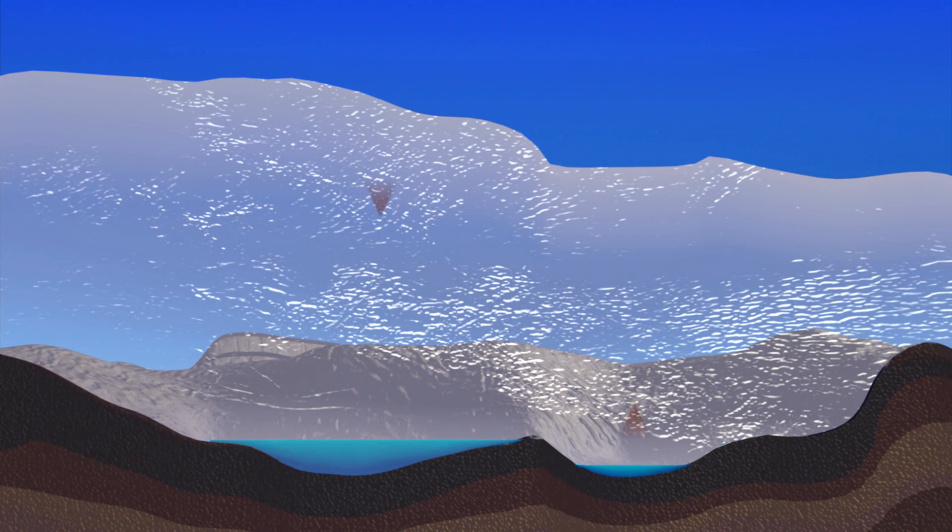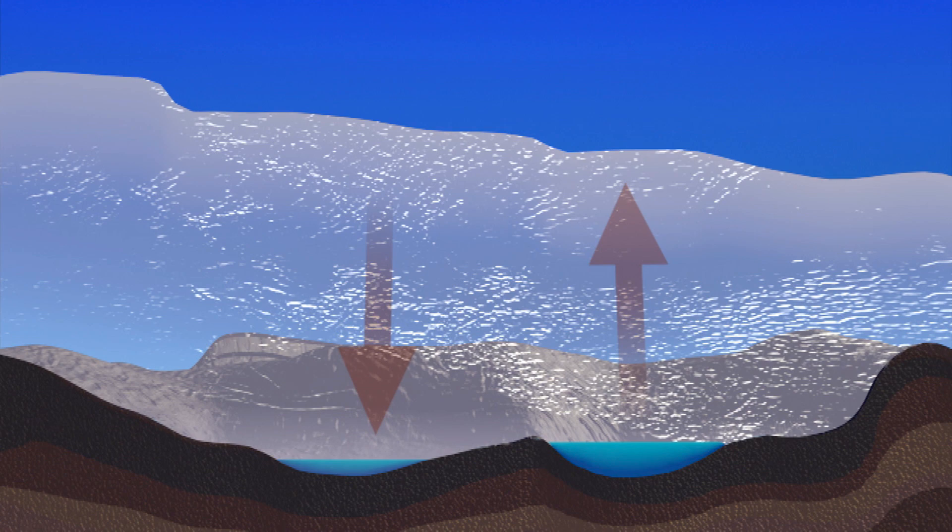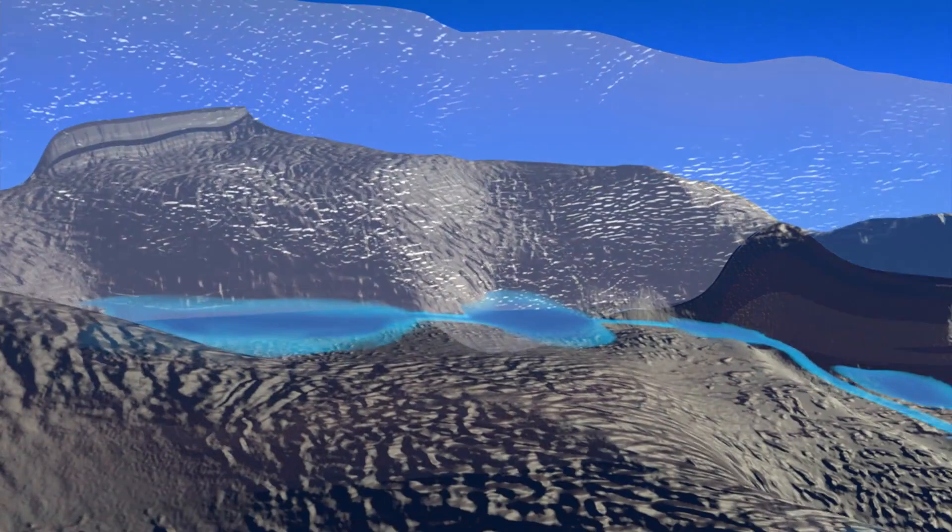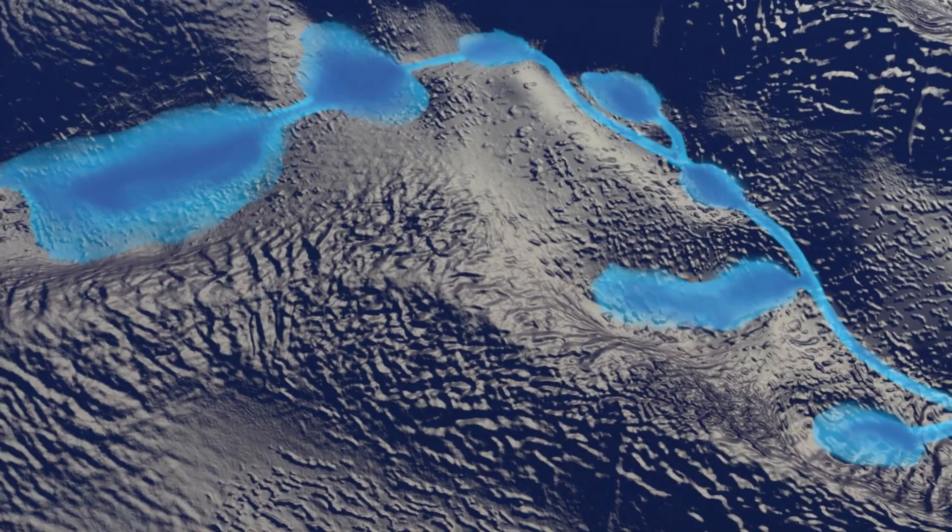By watching local areas of the surface of the massive ice sheet rise and fall due to fluctuations in the lake water levels below, we learned that vast hydrologic systems like rivers connect many of these lakes and that some actively fill and drain all the time.